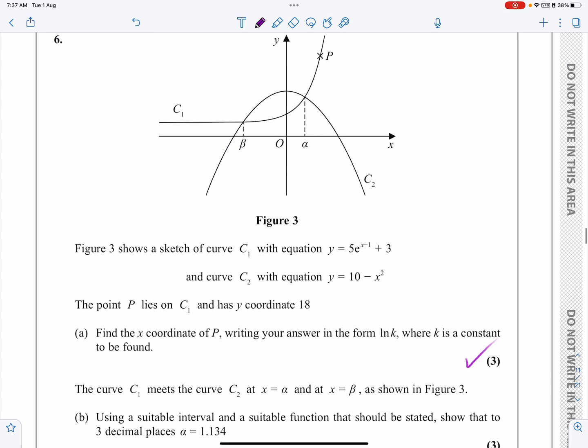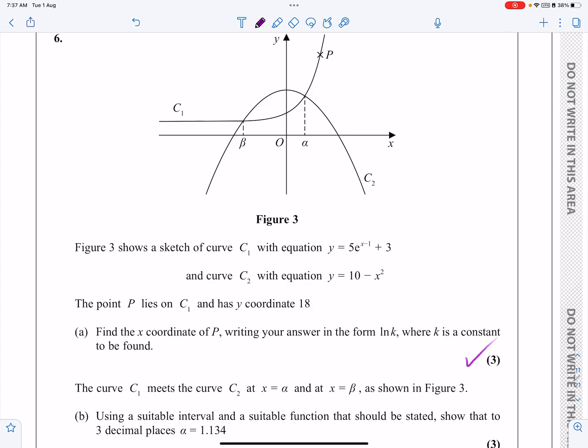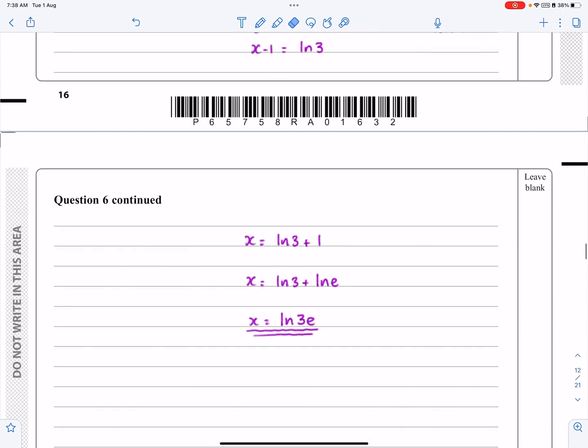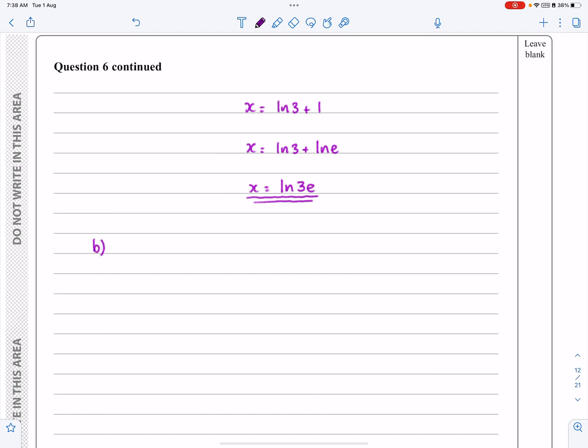So that's part A done. Let's have a look at the rest of the question. It says they meet at alpha and beta. Using a suitable interval and a suitable function that should be stated, so I need to state the function, they're not giving it to me. Show that alpha is 1.134 to three decimal places. Right, I know what my game plan is for this then. First of all, let's find this function or let's state this function. We're saying where the two graphs are equal to each other. So that's where the two functions, that one is equal to the other one.